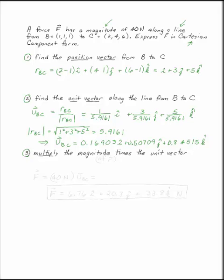Once you have the unit vector, multiply the magnitude of F. This is what you were given times this unit vector. So F is 40 newtons times UBC, which is equal to 6.76 I plus 20.3 J plus 33.8 K.